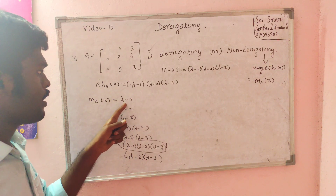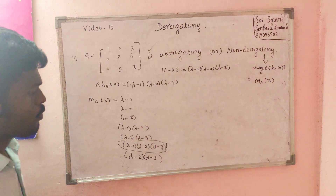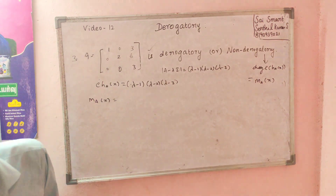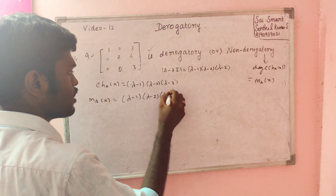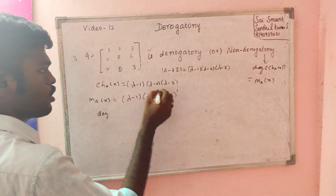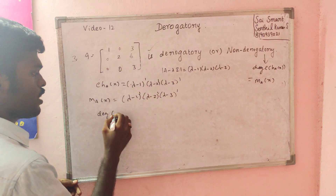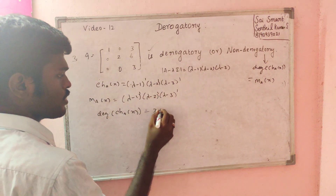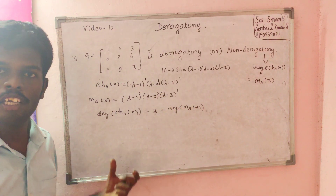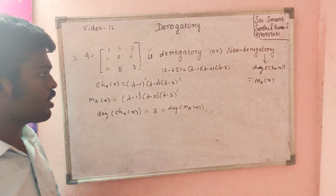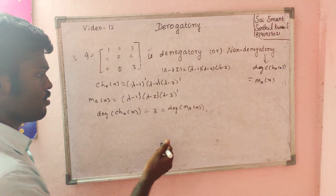Since the eigenvalues are distinct, the minimum polynomial is the same as the characteristic polynomial: (lambda minus 1)(lambda minus 2)(lambda minus 3). The degree of the characteristic polynomial equals the degree of the minimum polynomial, both equal to 3. Therefore, the matrix is non-derogatory.